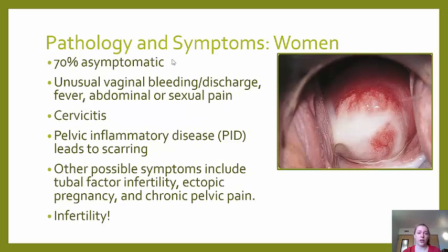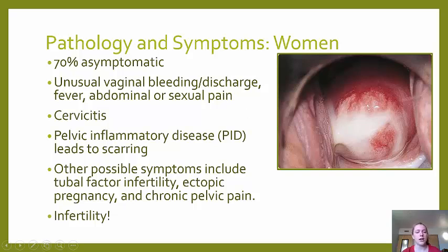In women, 70% are asymptomatic, which causes difficulties because the disease can be spread without knowing you have it. If symptoms do occur, they may include unusual vaginal bleeding or discharge, fever, abdominal pain, or pain during sexual intercourse. Chlamydia causes cervicitis — inflammation of the cervix — and if untreated can lead to pelvic inflammatory disease, scarring, painful urination, tubal factor infertility, and ectopic pregnancy, and yes, infertility.